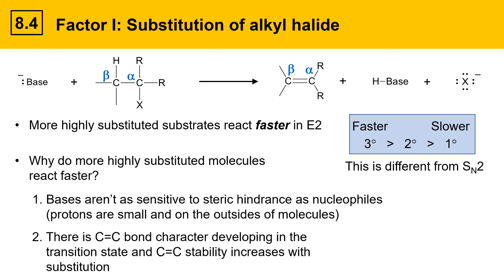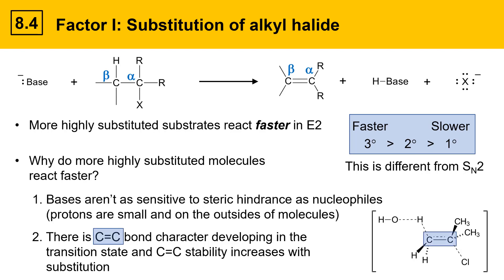The other factor is that there's C–C double bond character developing in the transition state of the E2 reaction, and C–C double bond stability increases with substitution. Here's a picture of that transition state. You can see there's double bond character developing — this bond has some double bond character, and as substitution increases, so does stability. Stabilizing a transition state lowers the activation energy and enables the reaction to go faster.